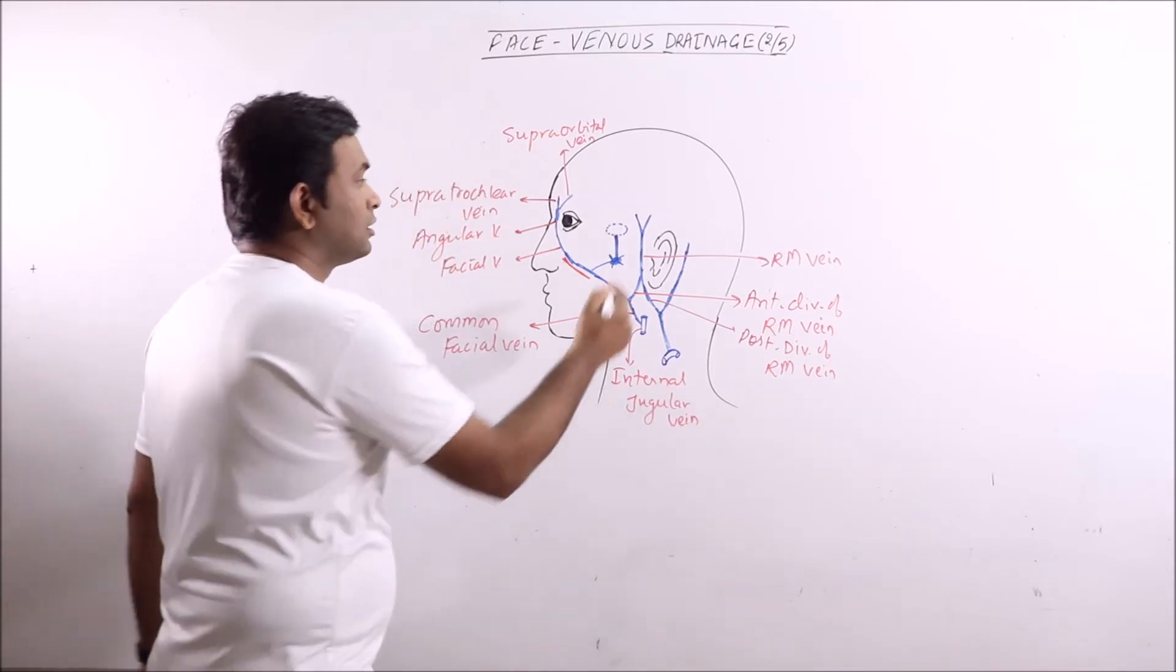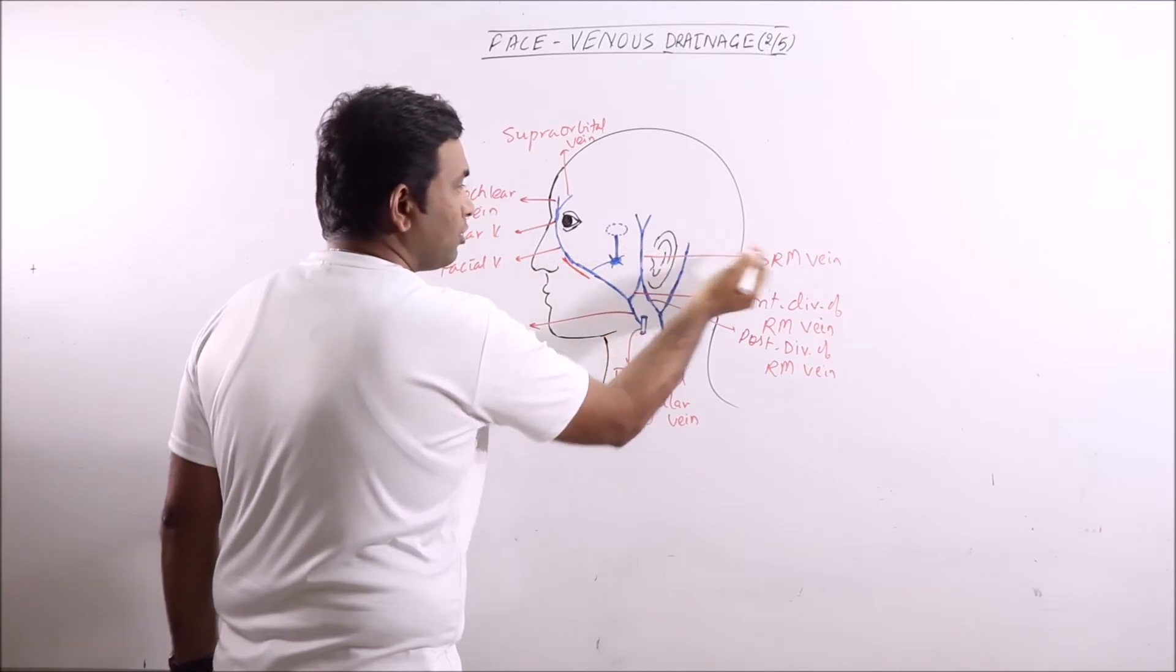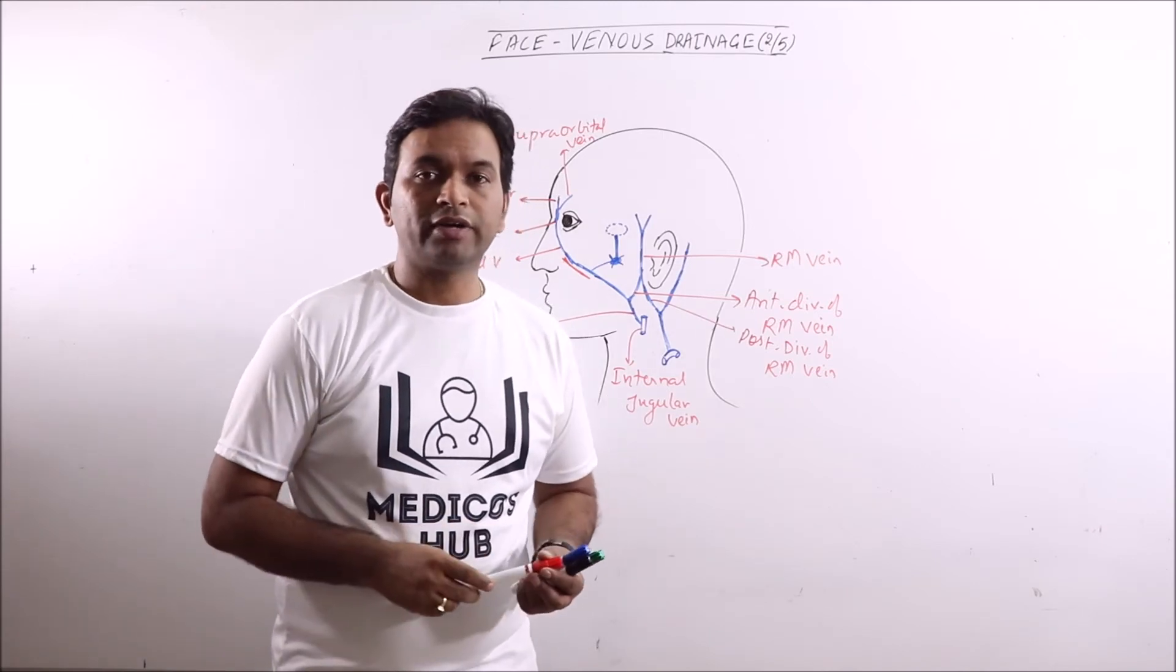Some parts of the face, like this region, are also drained by the maxillary vein or the retromandibular vein. So this is the venous supply of the face.